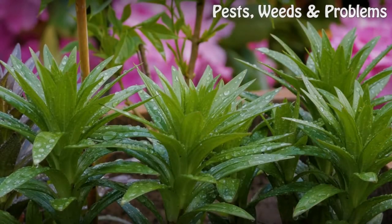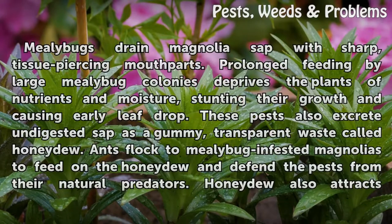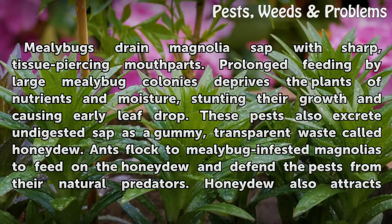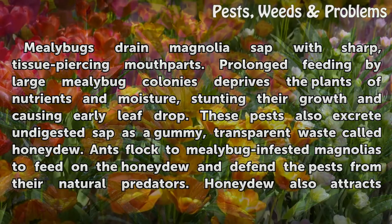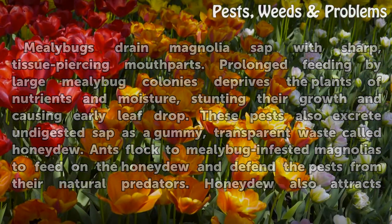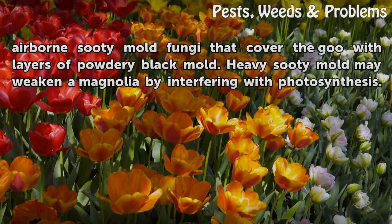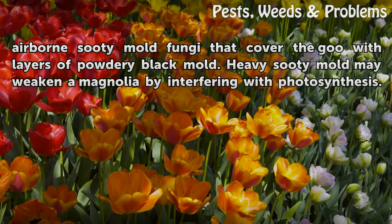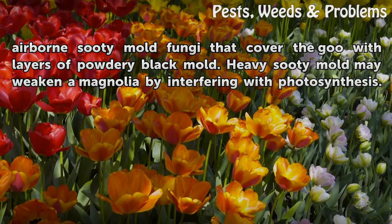Damage. Mealy bugs drain magnolia sap with sharp, tissue-piercing mouth parts. Prolonged feeding by large mealy bug colonies deprives the plants of nutrients and moisture, stunting their growth and causing early leaf drop. These pests also excrete undigested sap as a gummy, transparent waste called honeydew. Ants flock to mealy bug-infested magnolias to feed on the honeydew and defend the pests from their natural predators. Honeydew also attracts airborne sooty mold fungi that cover the goo with layers of powdery black mold. Heavy sooty mold may weaken a magnolia by interfering with photosynthesis.